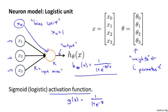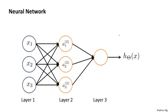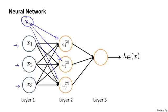So this little diagram represents a single neuron. What a neural network is, is just a group of these different neurons strung together. Concretely, here we have input units x1, x2, x3. And once again, sometimes we can draw this extra node x0 and sometimes not.